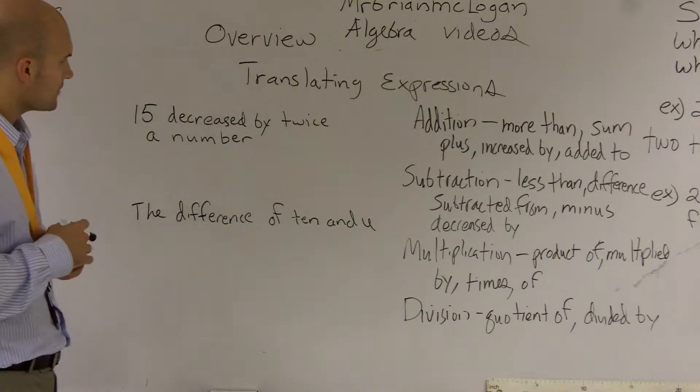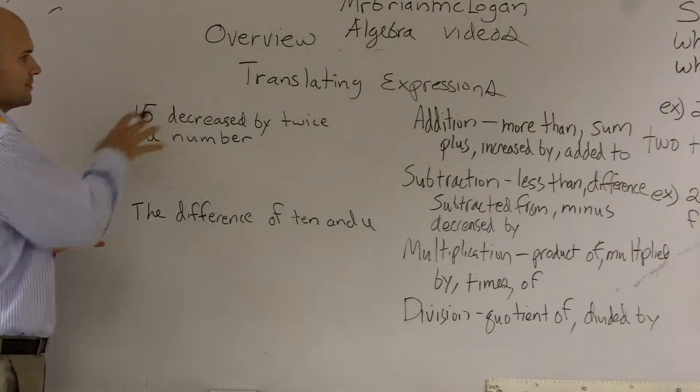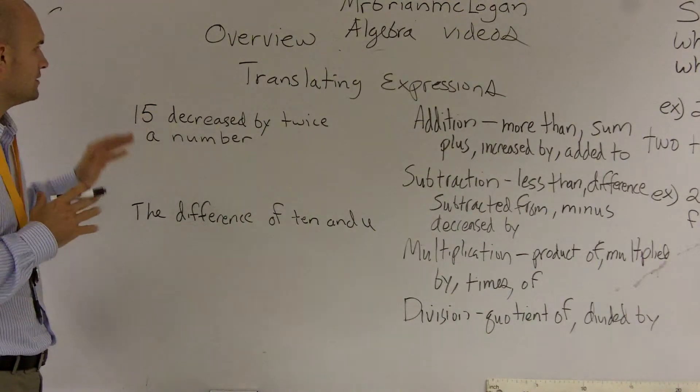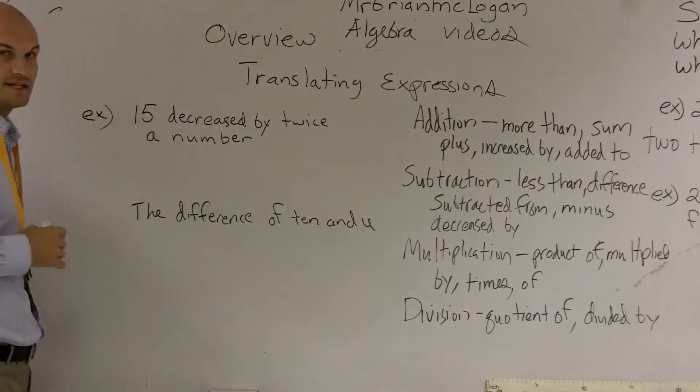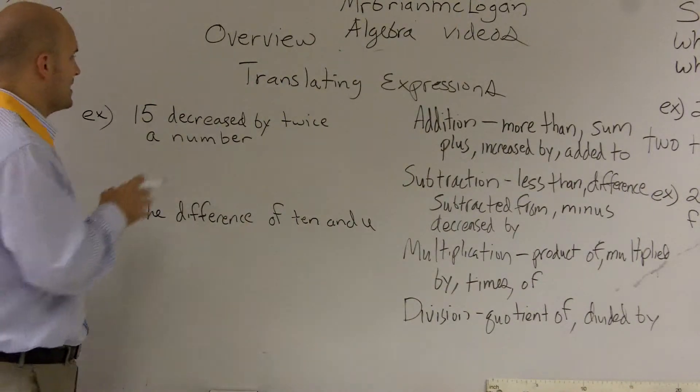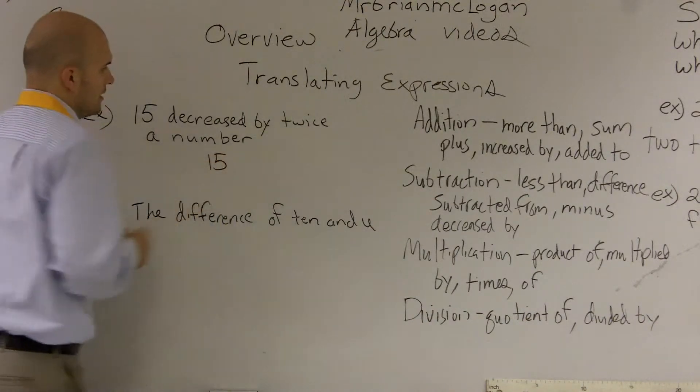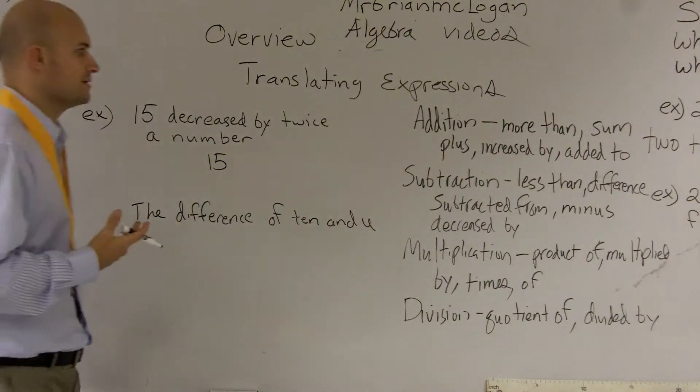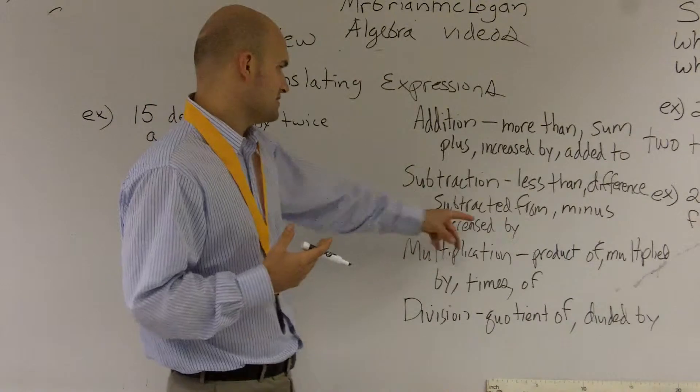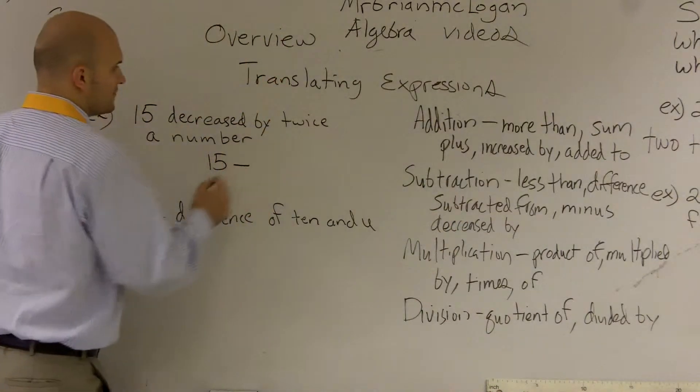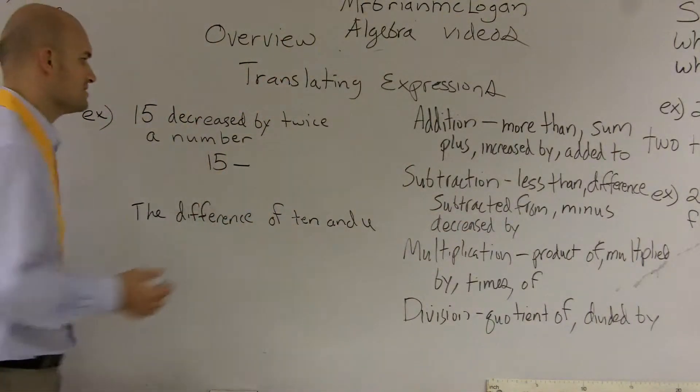So first thing, let's look at this one. This says 15 decreased by twice a number. So a lot of students, they just go and write 15, and then they say decreased by. Well, what does that mean? Well, decreased by means subtraction.